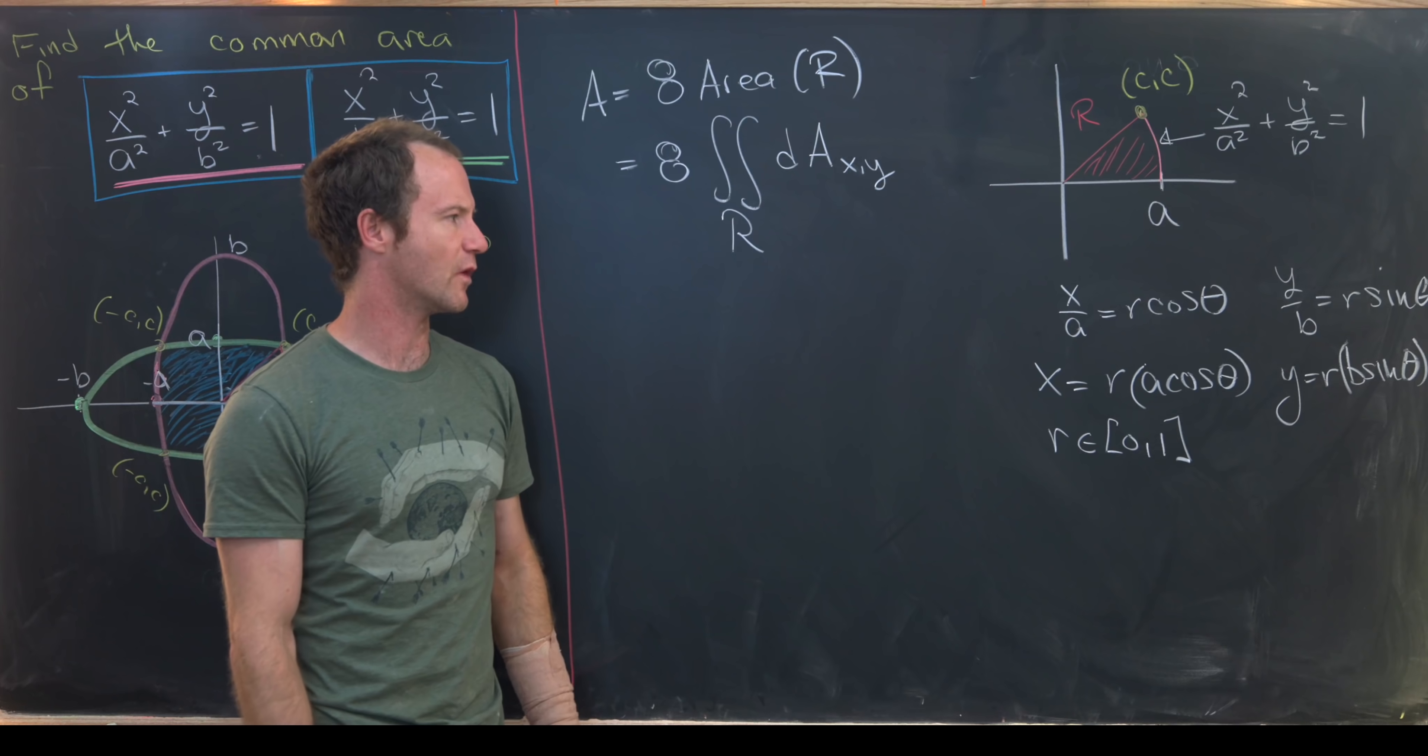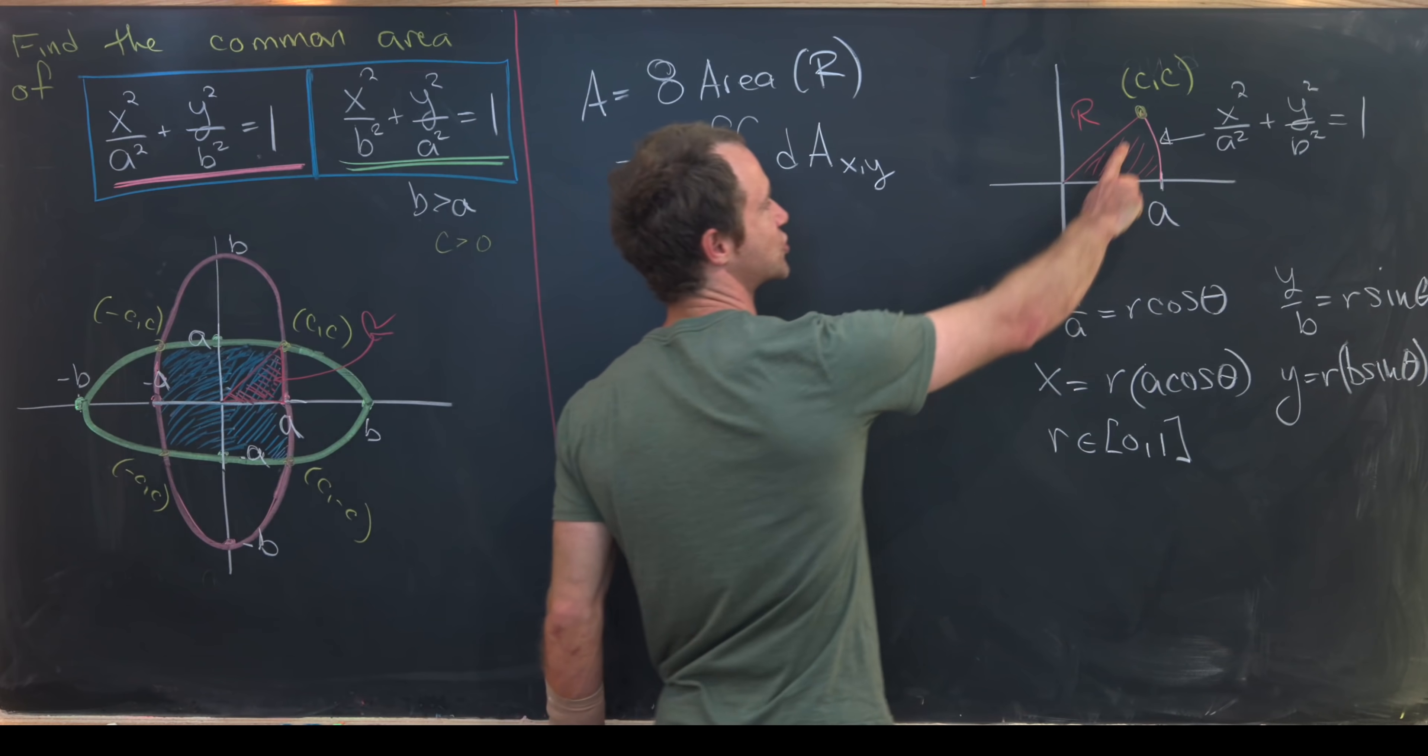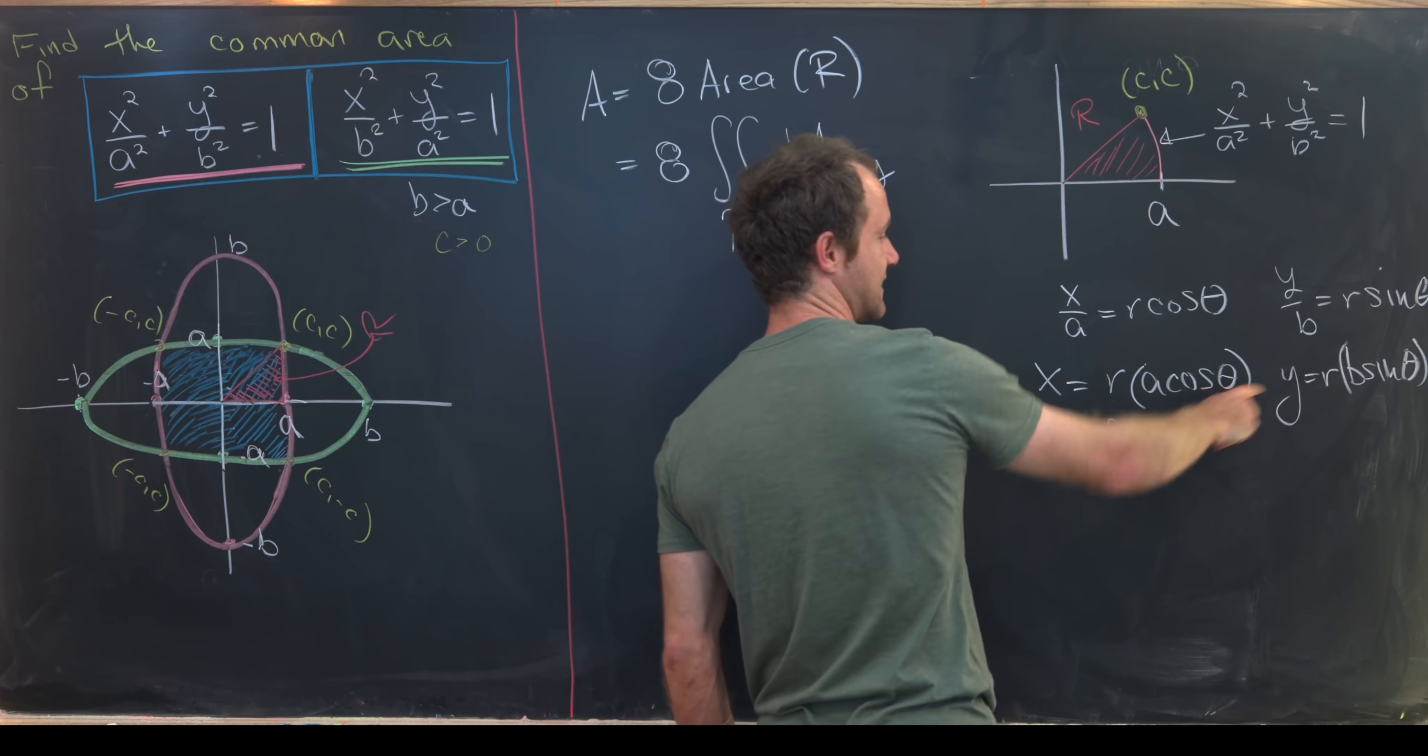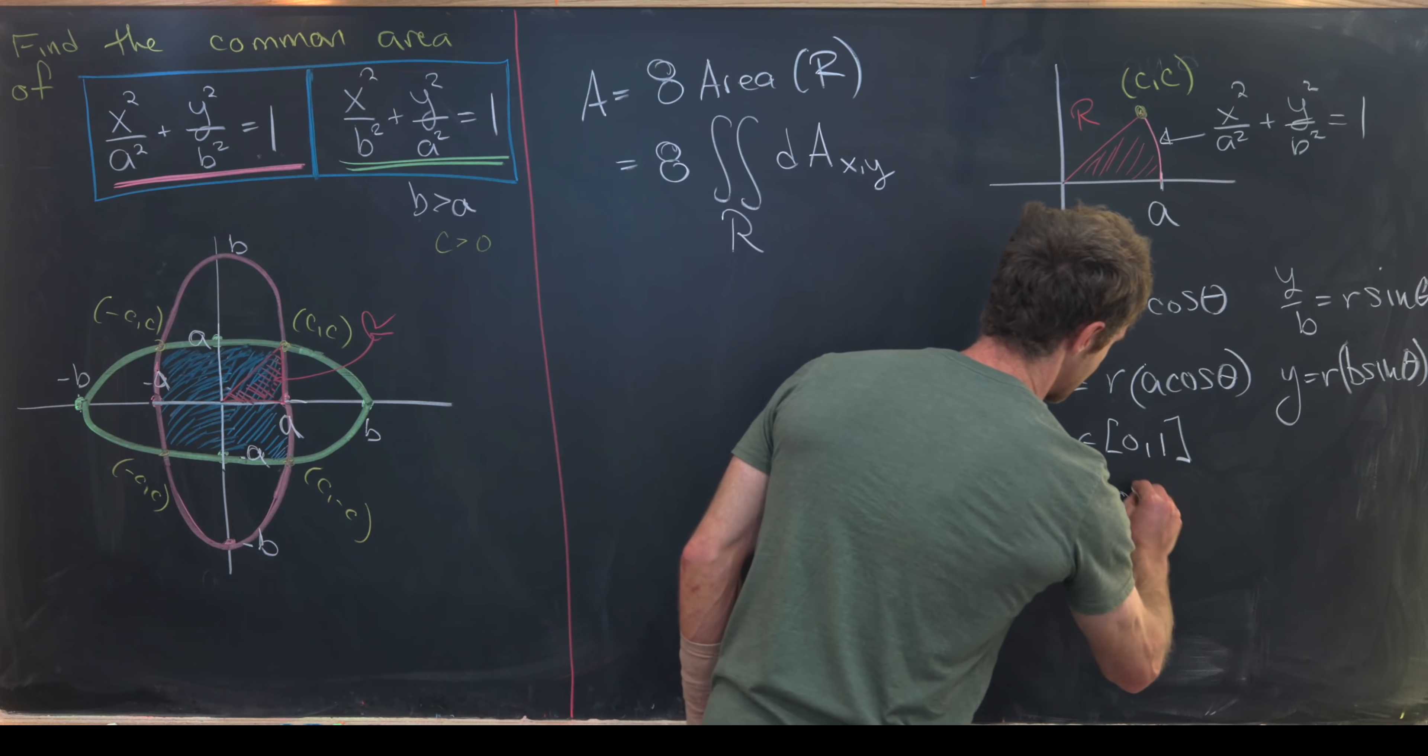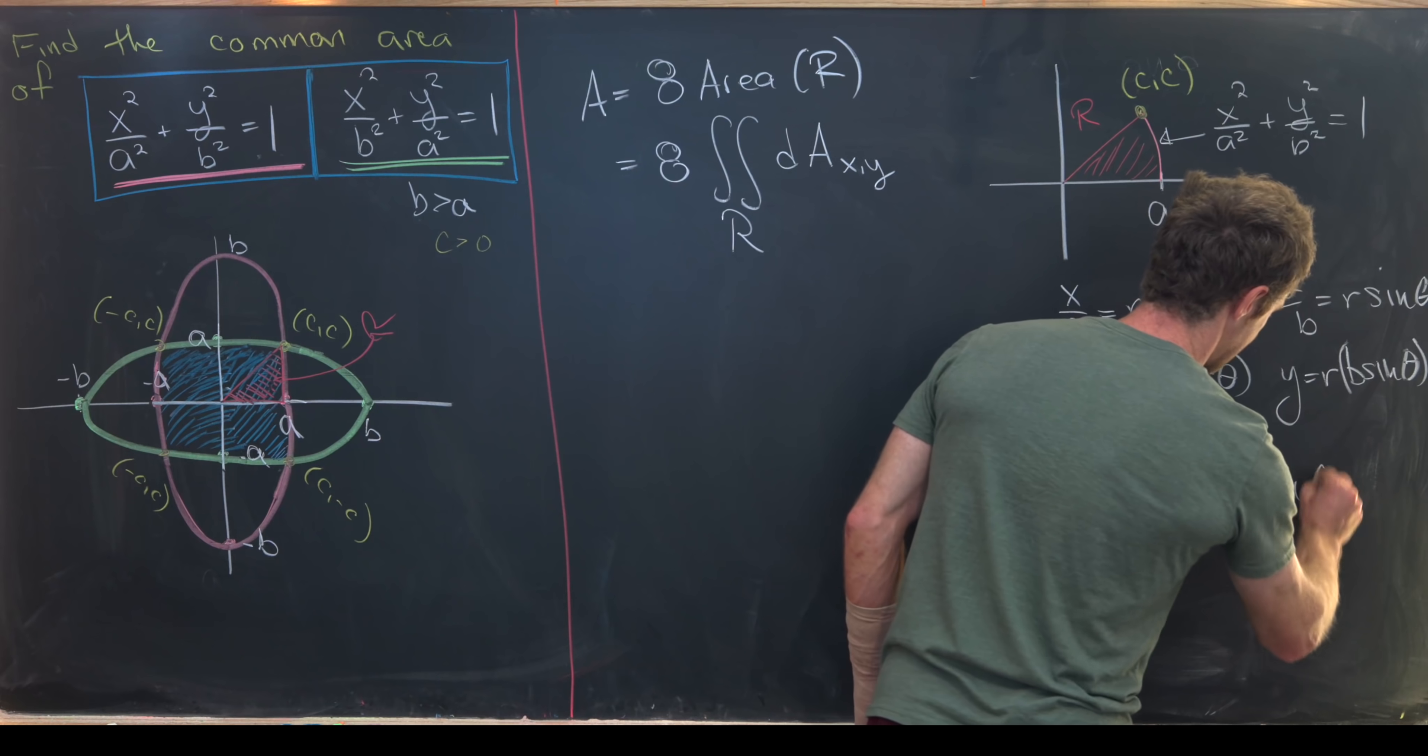Now we just need to figure out what theta ranges between. Notice that we're trying to go to this point where x and y are the same. That means r times a cosine theta must equal r times b sine theta. So r a cos theta equals r b sine theta.